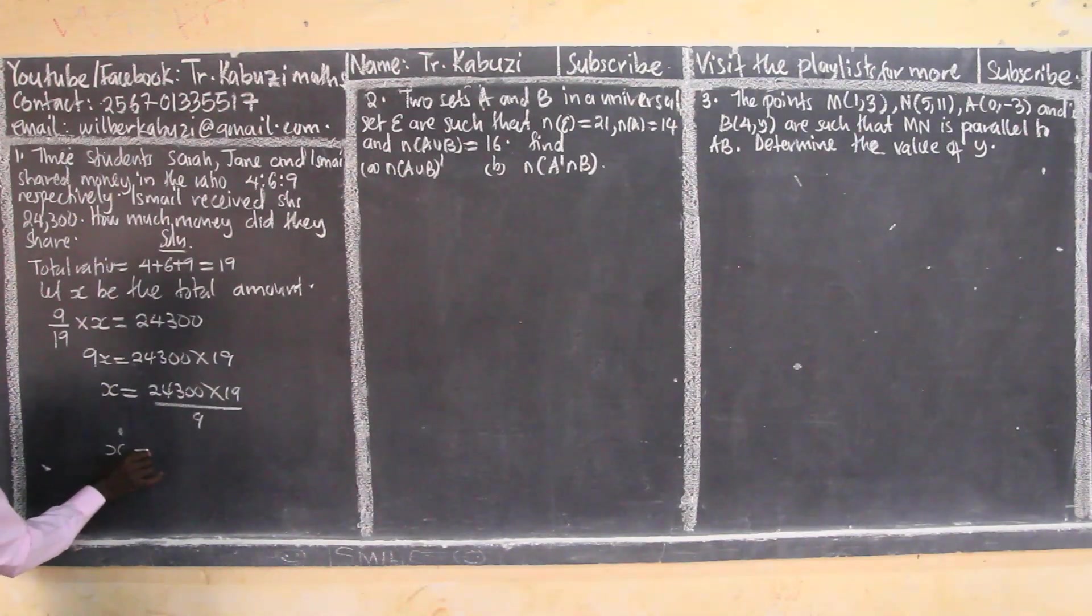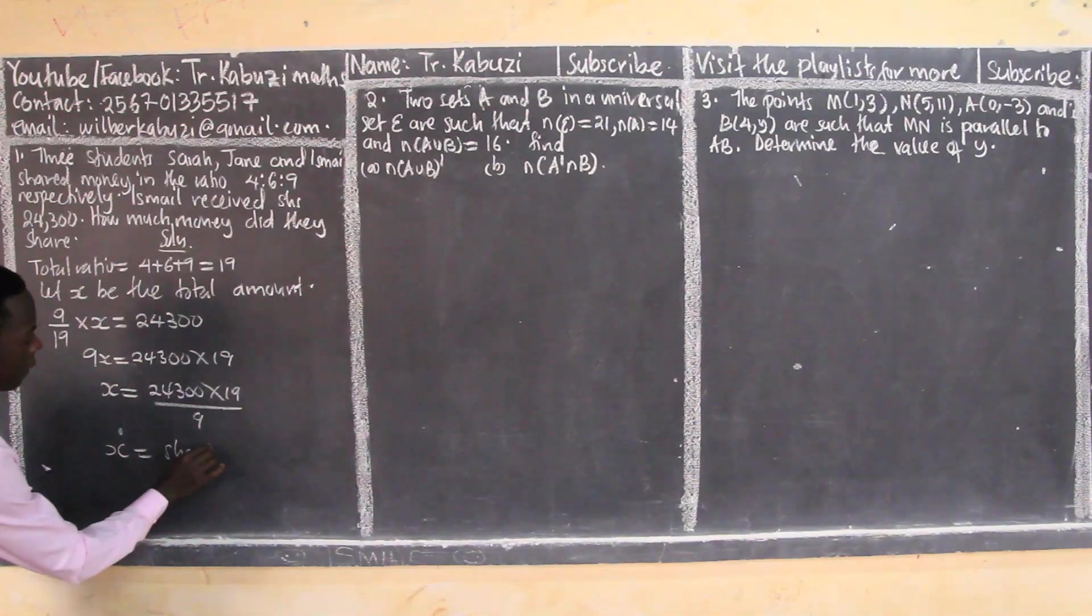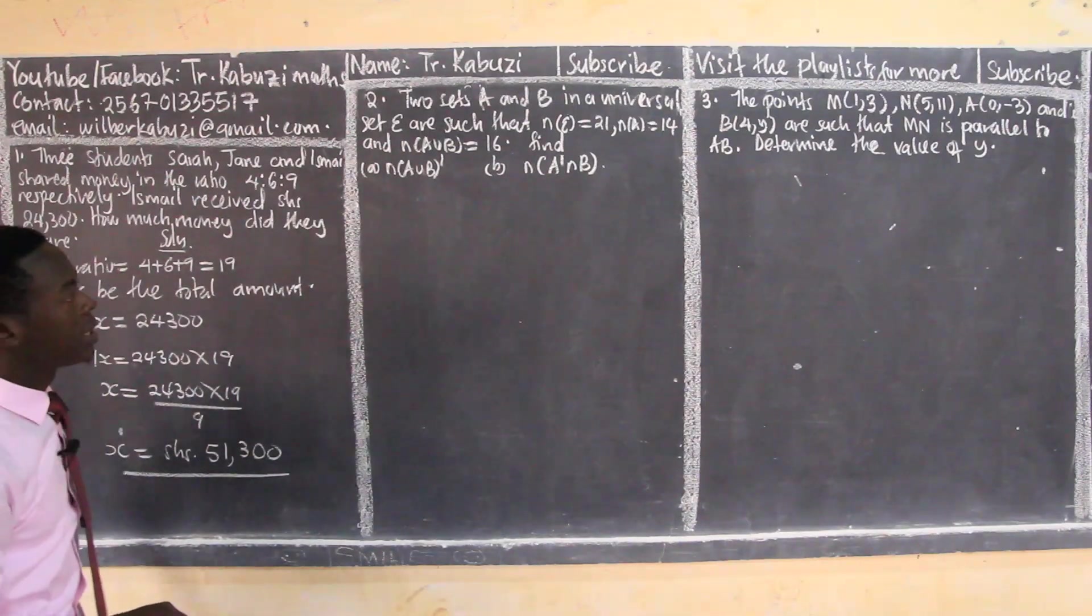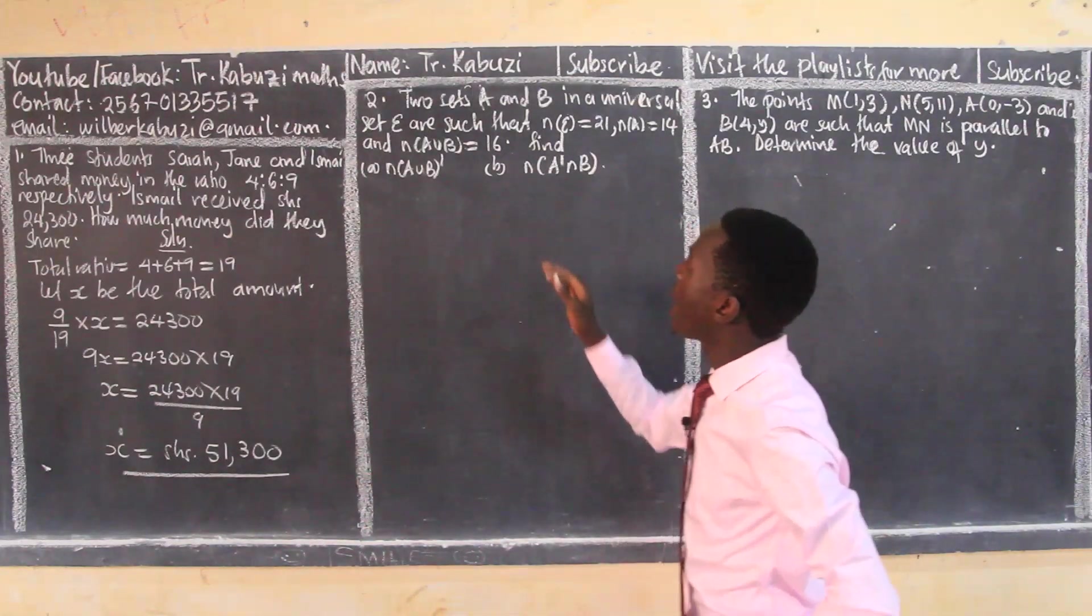And then you'll get your x here in shillings. That will give me 51,300. So this is the amount they shared. Now from there we move to number two.